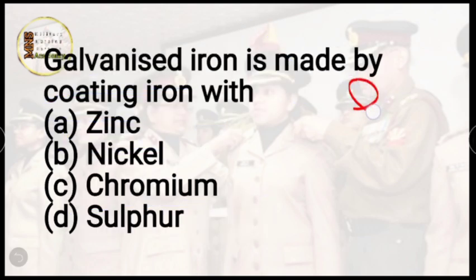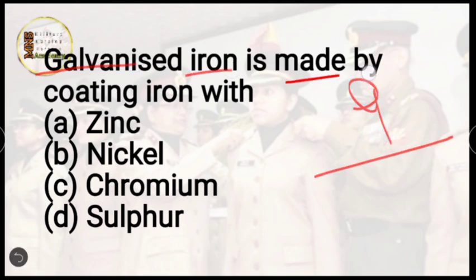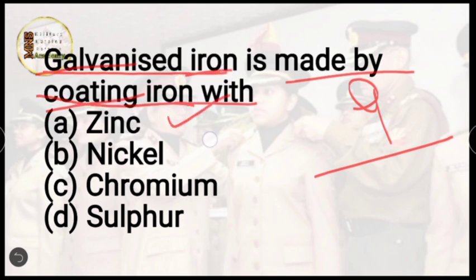Question number 9: galvanized iron is made by coating iron with which of the following? Options are zinc, nickel, chromium, or sulfur. The correct answer is zinc, option A.